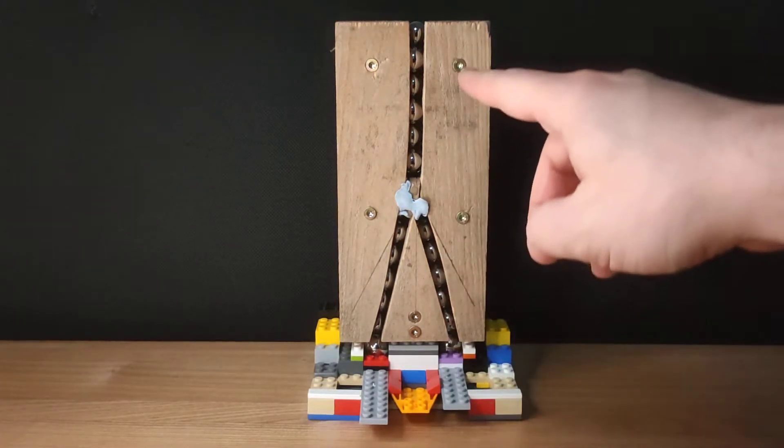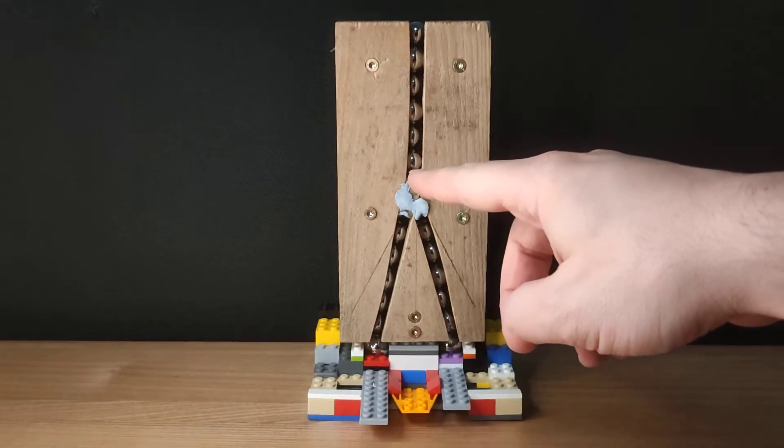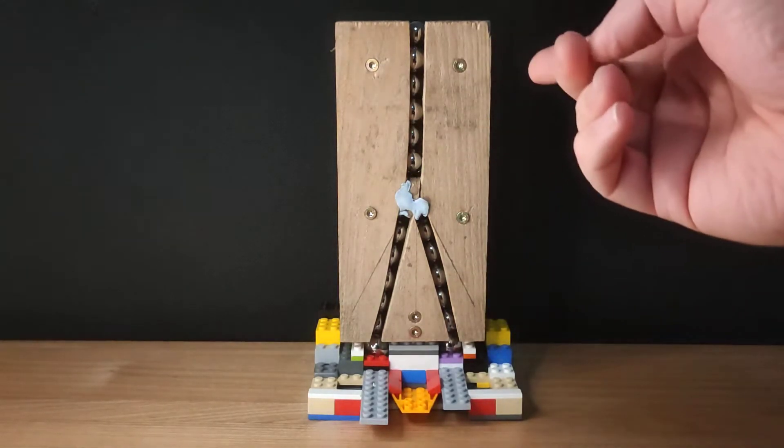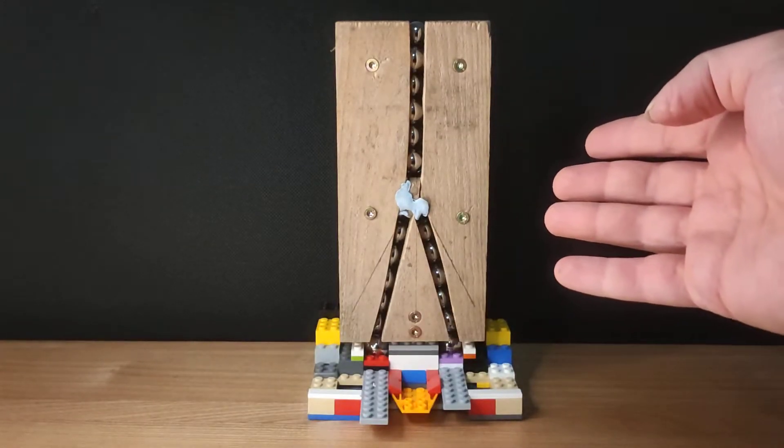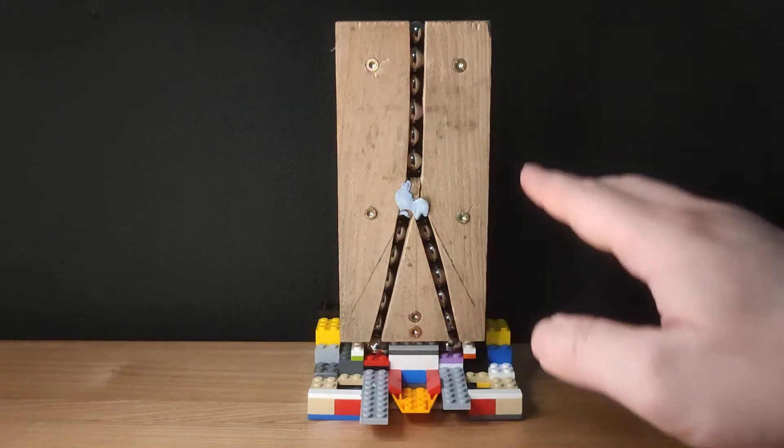But it would simplify things for Martin because he wouldn't need so many feeds coming down from the divider. The divider could end up having just 19 holes instead of 38, fewer tubes to bend, all that kind of stuff.